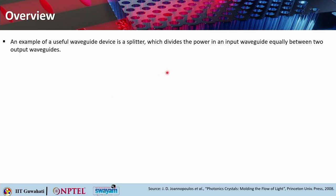We have already seen the analysis of two devices using temporal coupled mode theory. In the previous lecture, one was a filter, and another was a sharp waveguide bend. Here in this particular lecture we will look into another important waveguide device, which is a splitter.